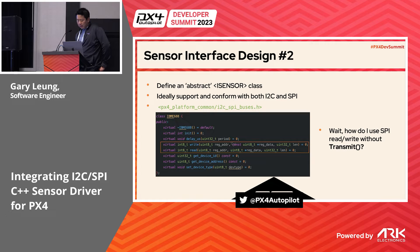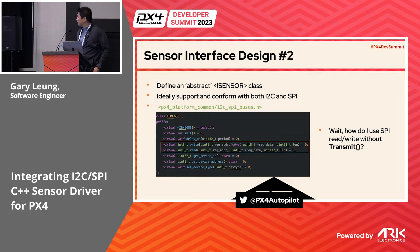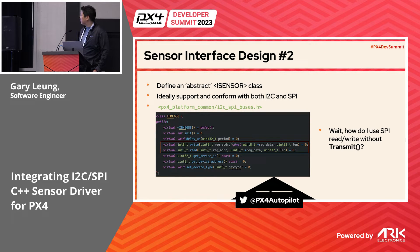I needed to define an interface or a pure virtual class in C++ which shared the common implementation between I2C and SPI. These include an init function, read and write for data transactions, device ID, device address, and so on.